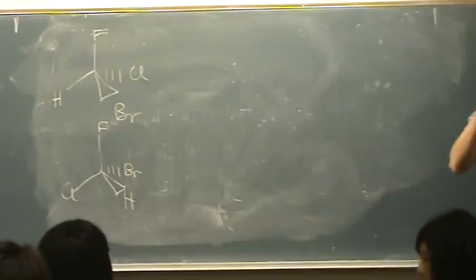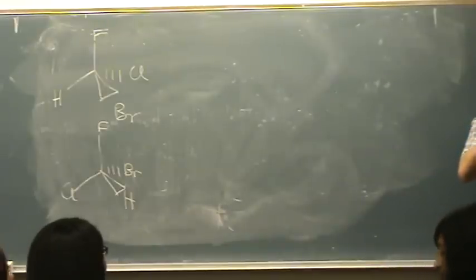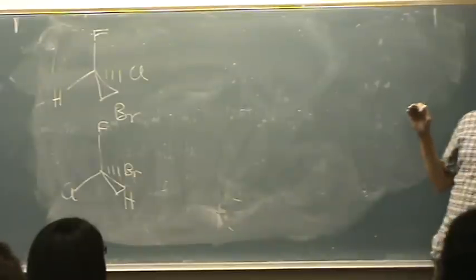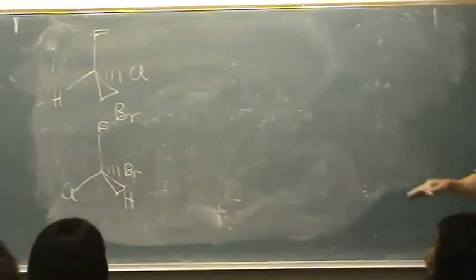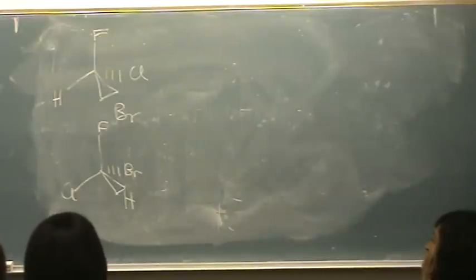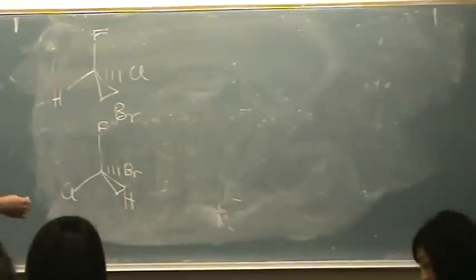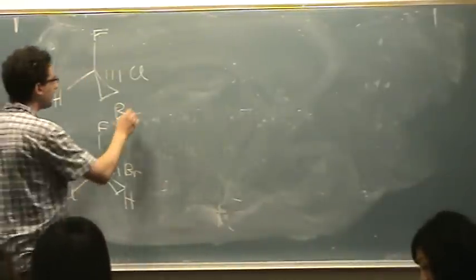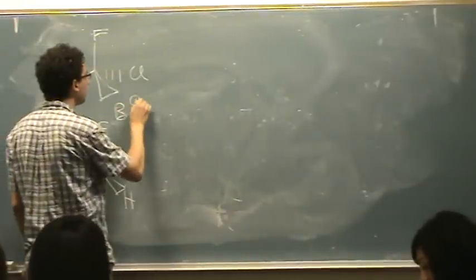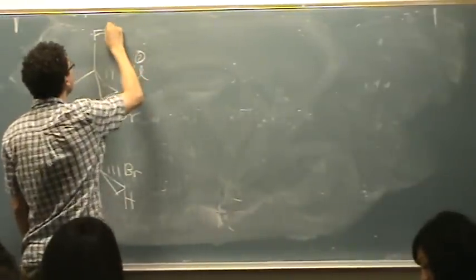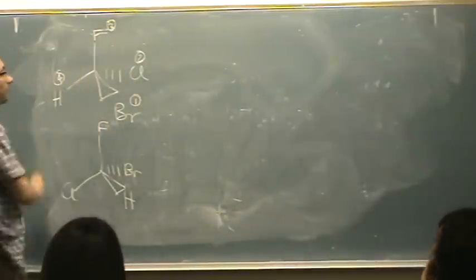We want to find out R or S. These are both chiral centers because there are four different groups on the chiral part. What you do is first prioritize — get out your periodic table. The heaviest is bromine: 1, then chlorine: 2, then fluorine: 3, then hydrogen: 4.